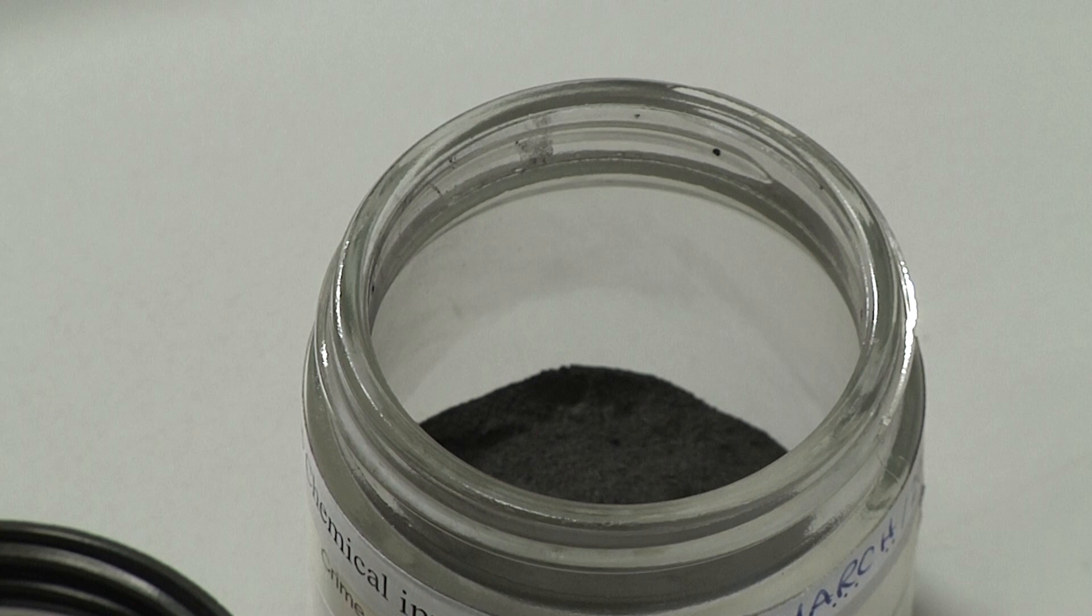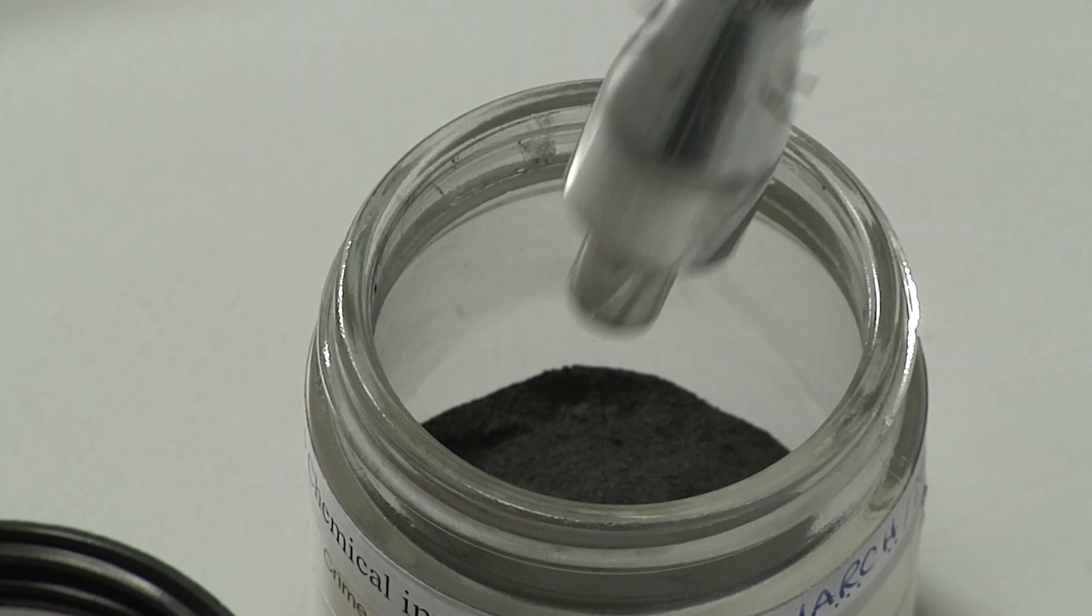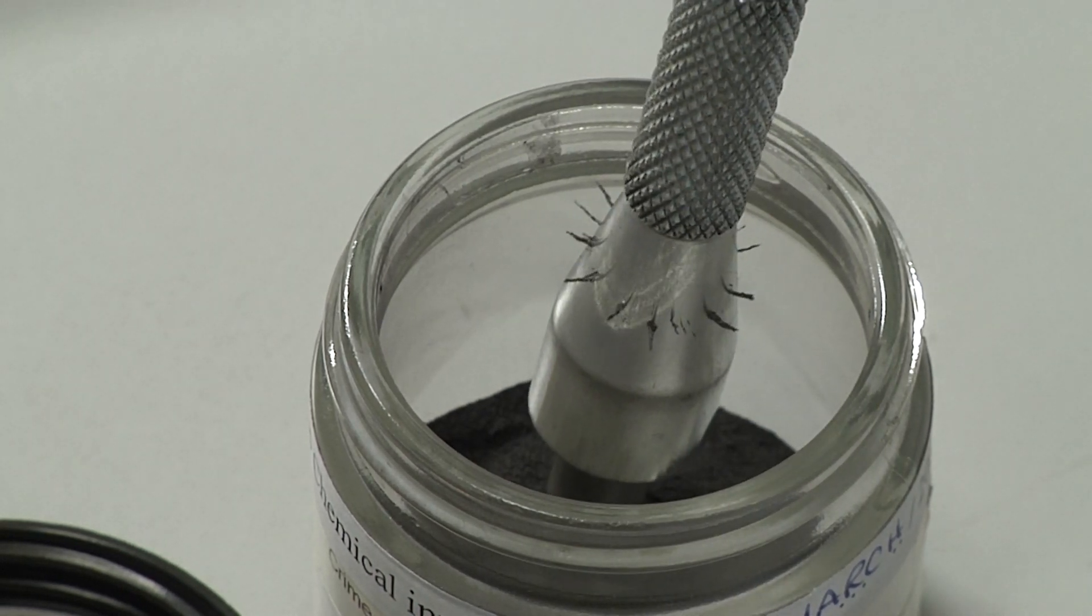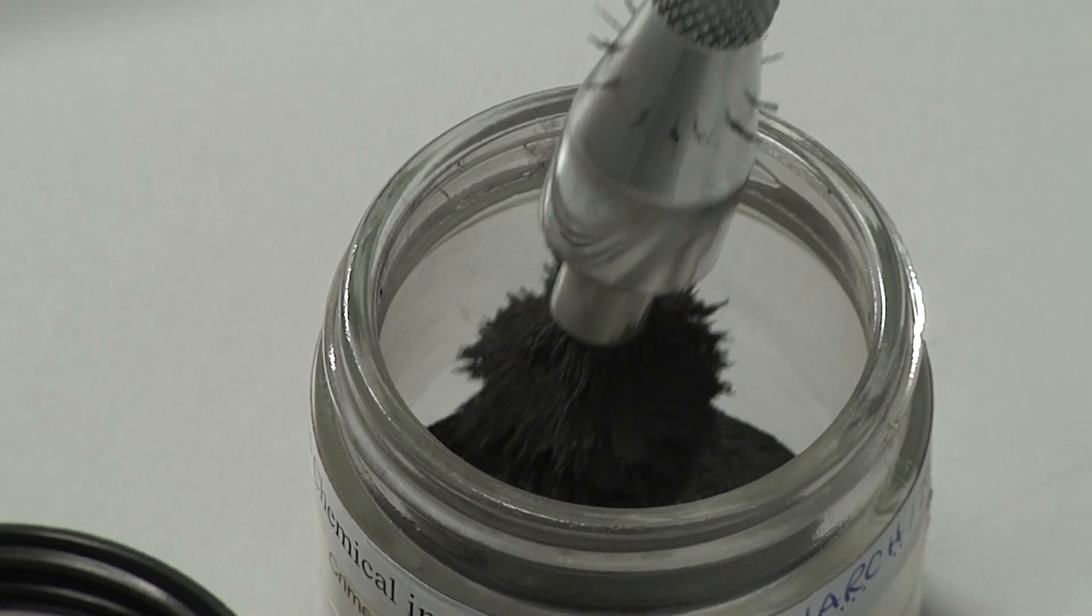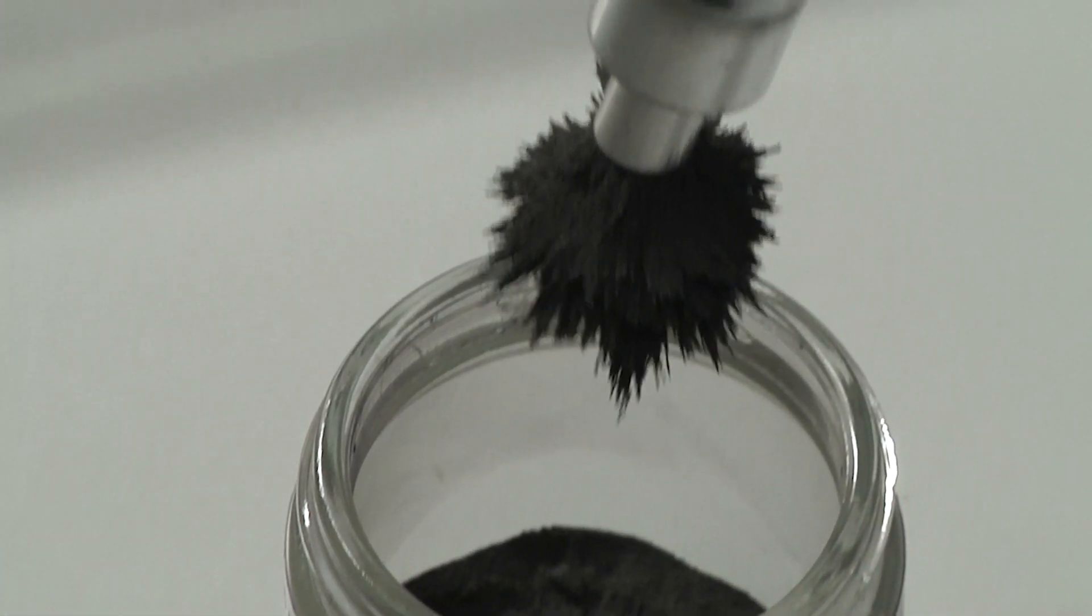Finger mark powders are used to enhance marks on non-porous surfaces. Different metals are used to make finger mark powders. Powders are simply metallic dust which are applied using a special powder brush.